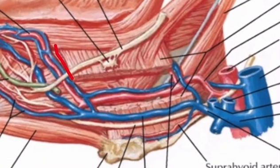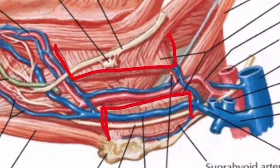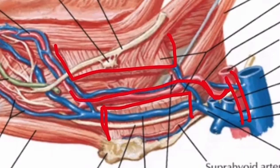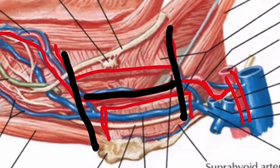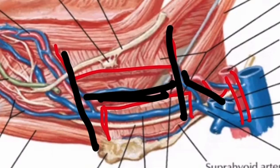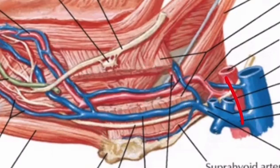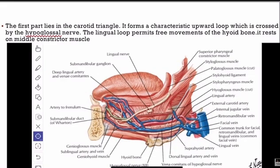I'll mark the hyoglossus muscle — this is the hyoglossus muscle that is cut, this is the external carotid artery, and this is the lingual artery. The hyoglossus muscle divides the lingual artery into three parts: the first part, the second part, and the third part.